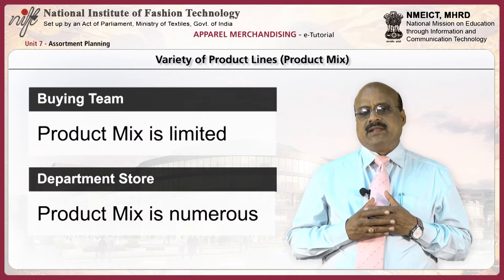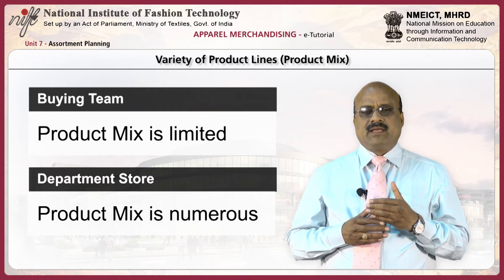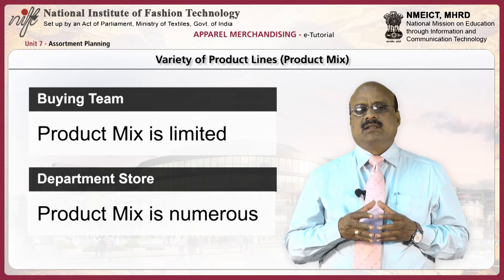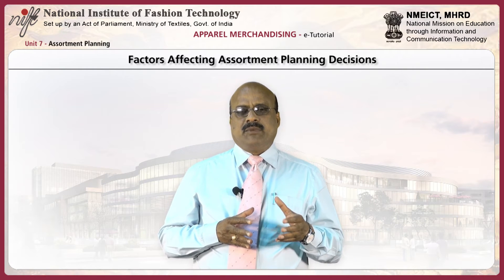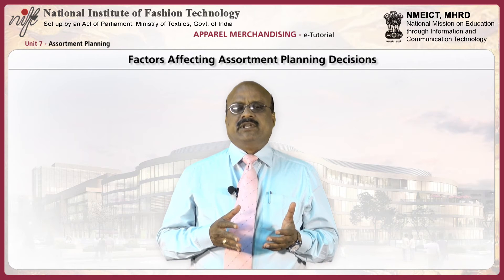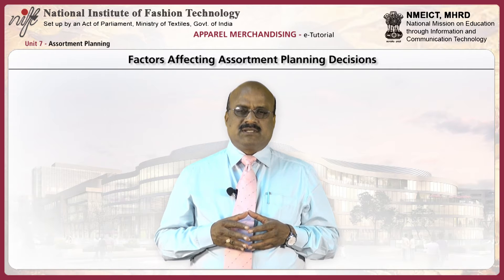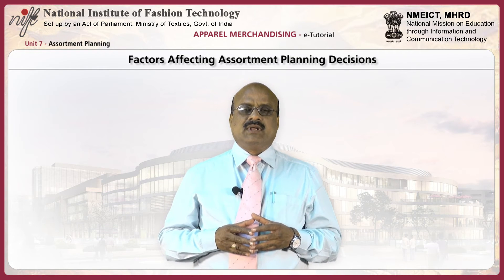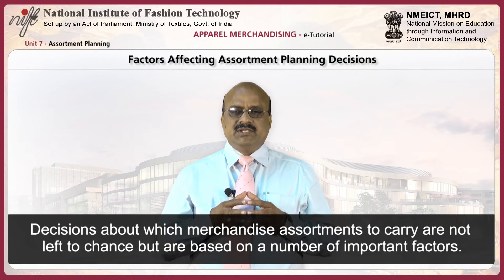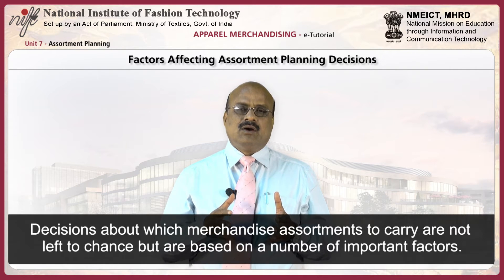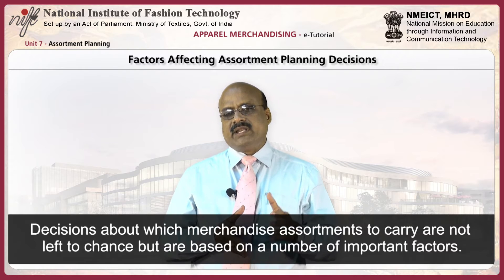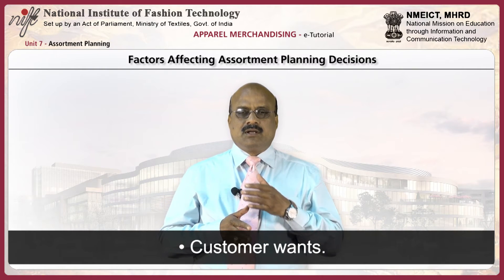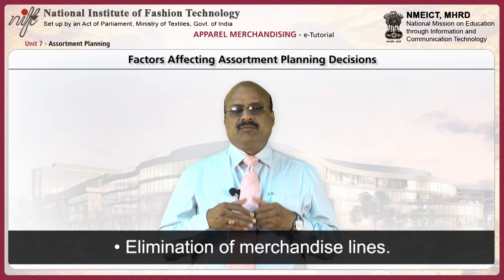The variety of product lines may be limited, as in the specialty store which offers only a few lines of merchandise, or may be numerous, as in a department store. In assortment planning, the merchandise manager and buyer together must determine where to place the greatest emphasis. Decisions about which merchandise assortments to carry are based on important factors including types of retail institution, past sales records, customer wants, types of goods offered, and elimination of merchandise lines.